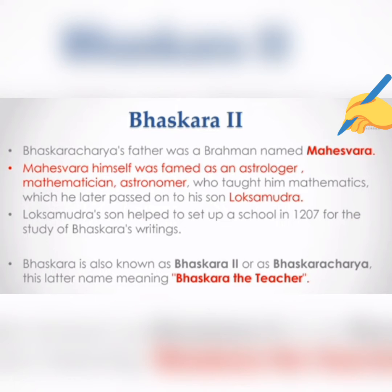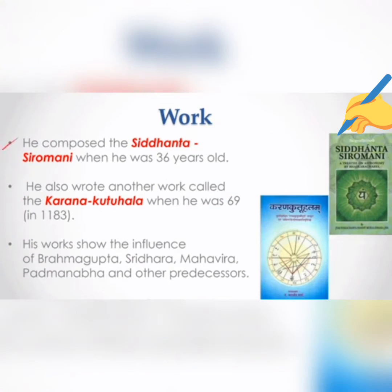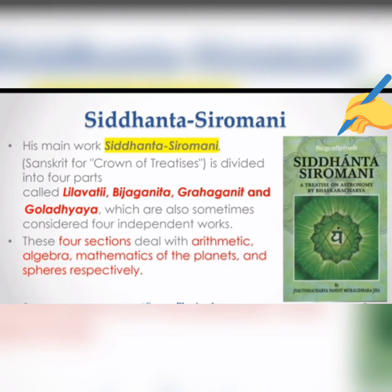It was Bhaskara First's influence that inspired Bhaskara Second to join Ujjain, India's most prestigious mathematical center at the time. Bhaskara is said to have been the head of an astronomical observatory at Ujjain, the leading mathematical center of medieval India. He composed the Siddhanta Shiromani when he was 36 years old, and also wrote another work called the Karan Kutuhalam when he was 69 years old.